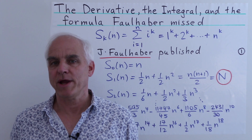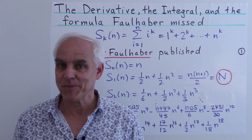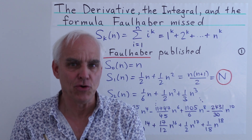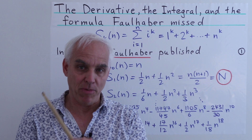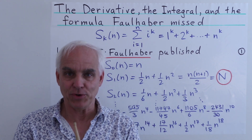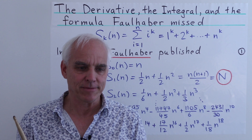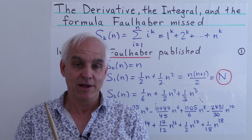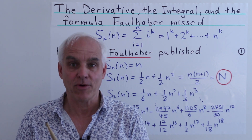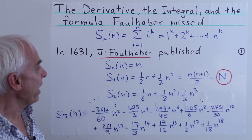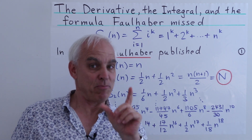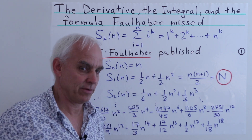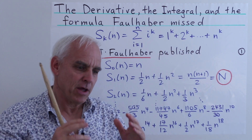Hello everyone, I'm Norman Wildberger and welcome to the algebraic calculus. In today's video we're going to demonstrate a lovely new formula for calculating Faulhaber polynomials and Bernoulli numbers. This is something that perhaps Faulhaber and Bernoulli and many other people have somehow missed, although as you'll see it's incredibly elementary and elegant. Along the way we're going to introduce two very important ideas: the algebraic derivative and the algebraic integral.